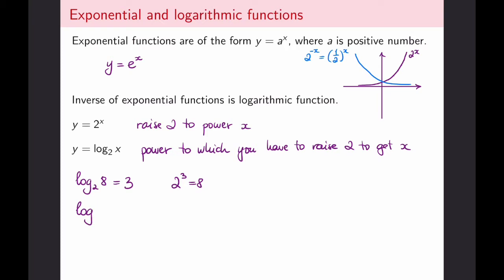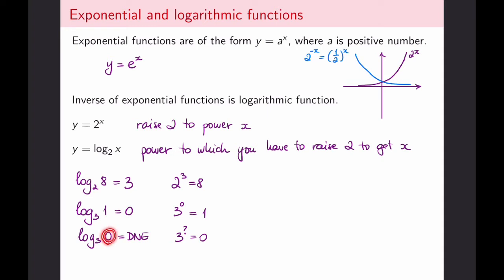Let's try another one: logarithm base 3 of 1. To which power do we raise 3 to get 1? Raising anything to power 0 produces 1, so the answer is 0. Now notice that you can't always compute a logarithm. For example, logarithm base 3 of 0 does not exist, because there is no power to which I can raise 3 to get 0. Similarly, if I have anything negative inside the logarithm, that won't produce any reasonable output. So logarithm is only defined for inputs strictly greater than 0.